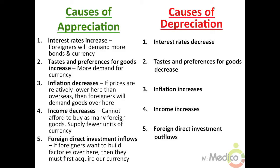Four: income increases — if this economy becomes stronger than a foreign economy, the foreign economy cannot afford as many of our goods; however, we can afford to purchase more foreign goods. Five: foreign direct investment outflows — if we want to build more factories overseas than foreigners want to build here, our currency will depreciate as we increase the supply of our currency while demanding more foreign currency.